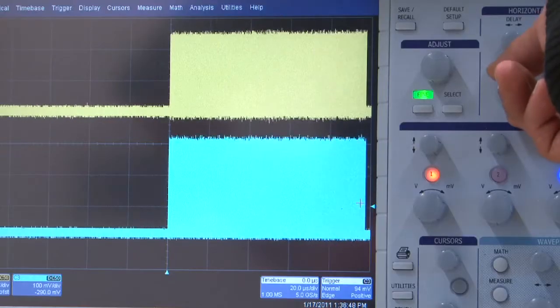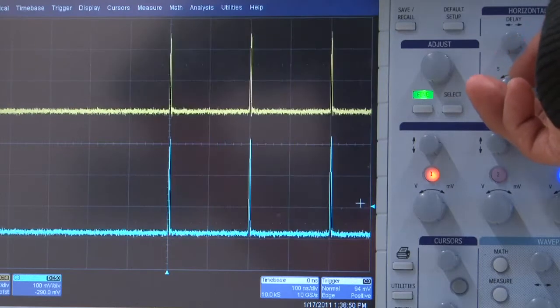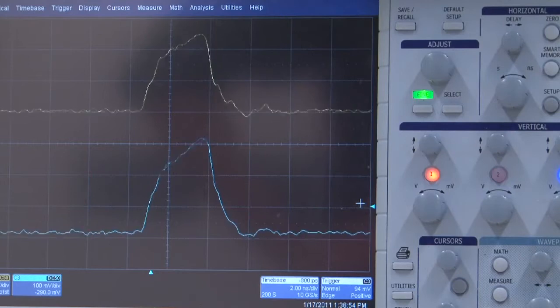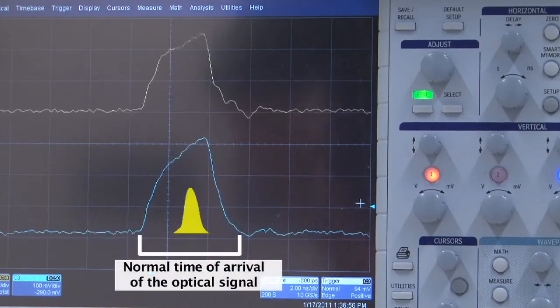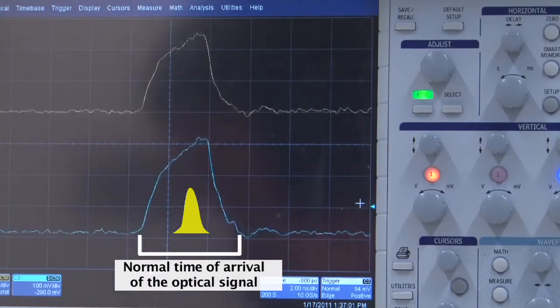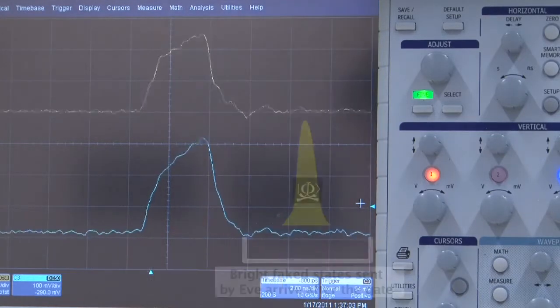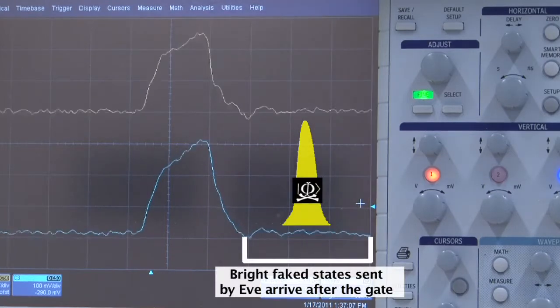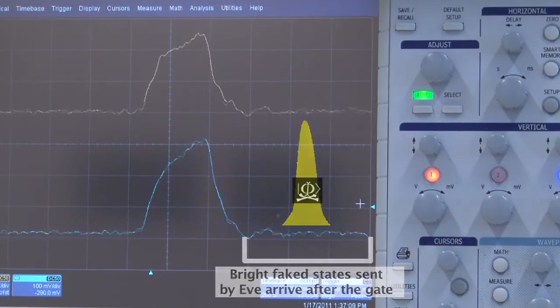We now zoom into a single frame and see individual gates. The system normally expects the quantum signals to arrive within these detection gates. Our attack, which is an intercept and resend kind of an attack, times the pulses, however, to arrive after the gate. We have checked various time delays and the intensity of the pulses to optimize the attack.